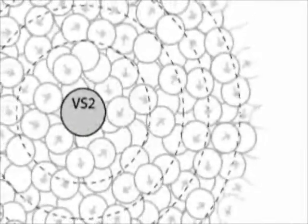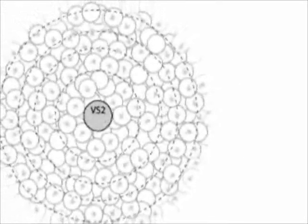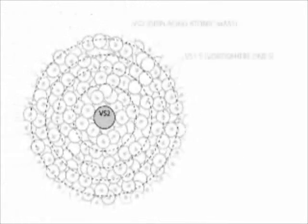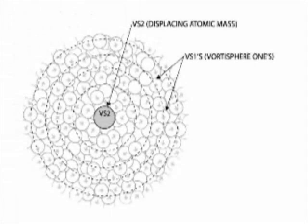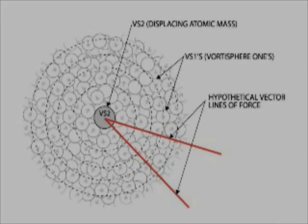In other words, the less atomic mass or VS2s displacing the cosmic matrix, the less gravitational force is exerted against the mass by displacement. Atomic mass displaces VS1s and sets up vector lines of force in the VS1s, meaning that there are more VS1s rebounding off of each other along the vector lines than they would if rebounding randomly without atomic matter present.